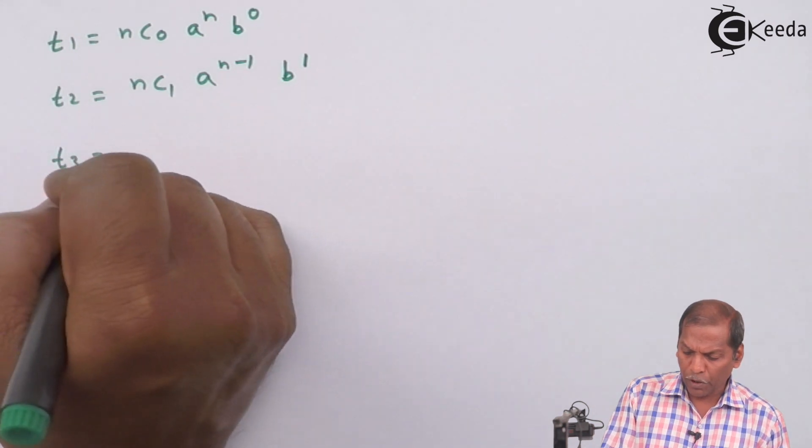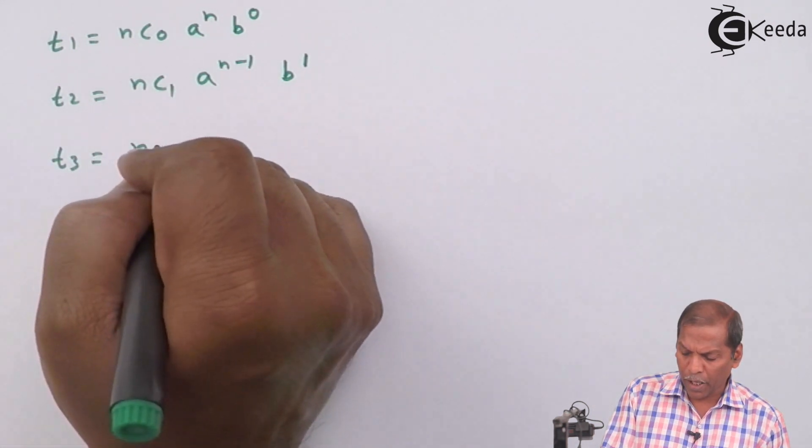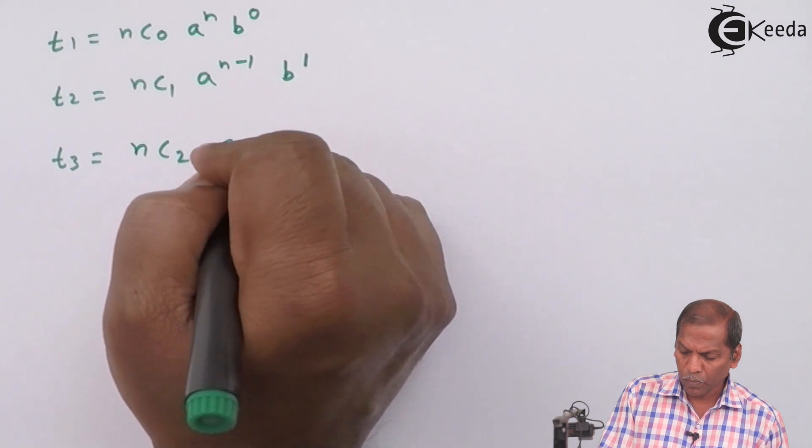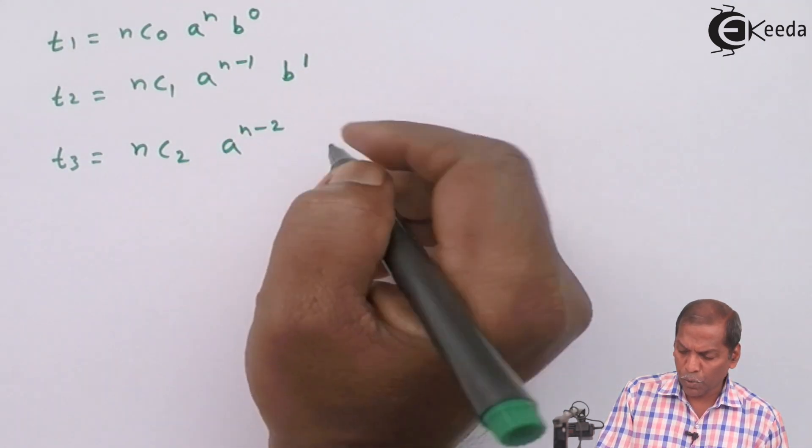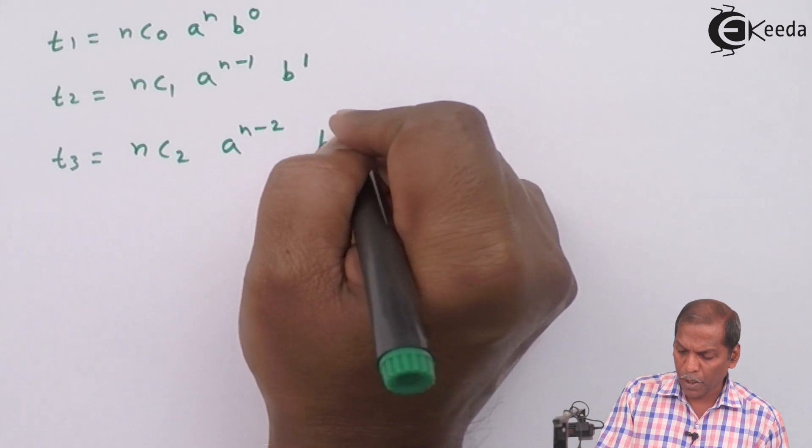Next term, T3, we write nC2 A to the power n minus 2 B to the power 2.